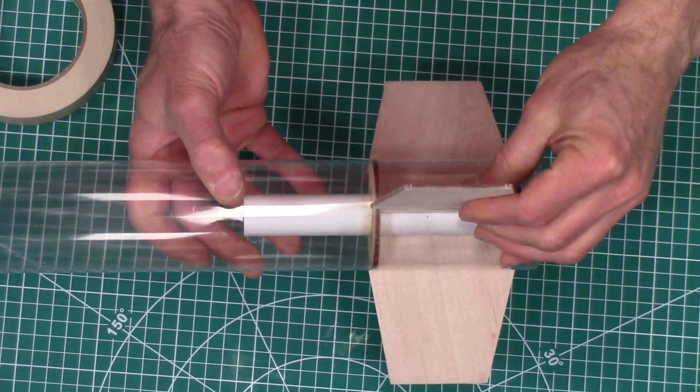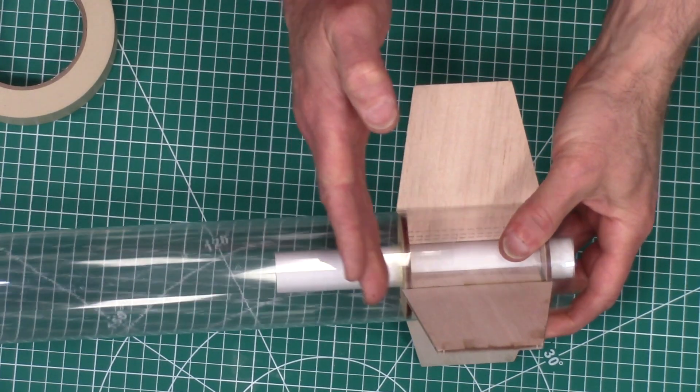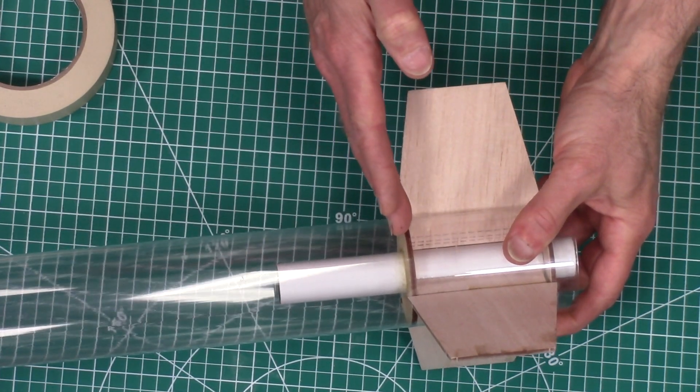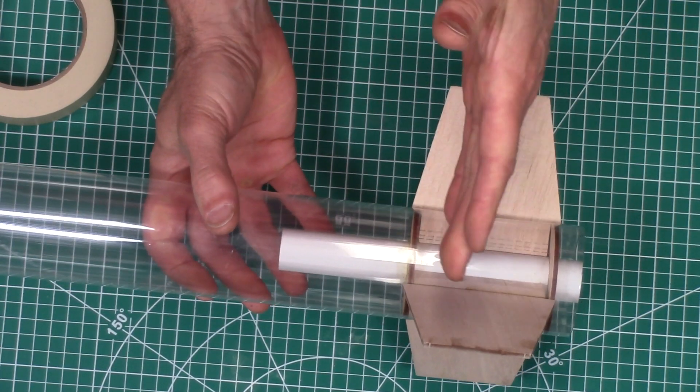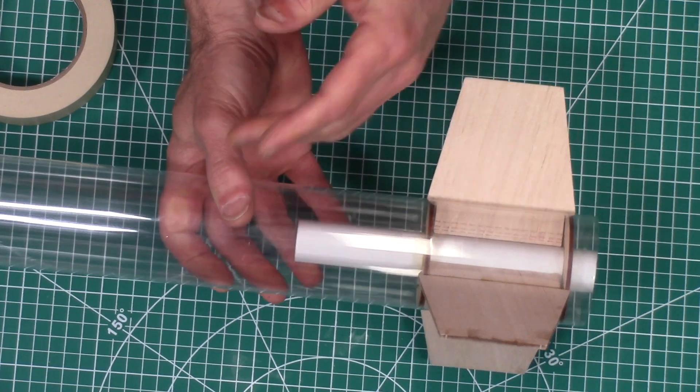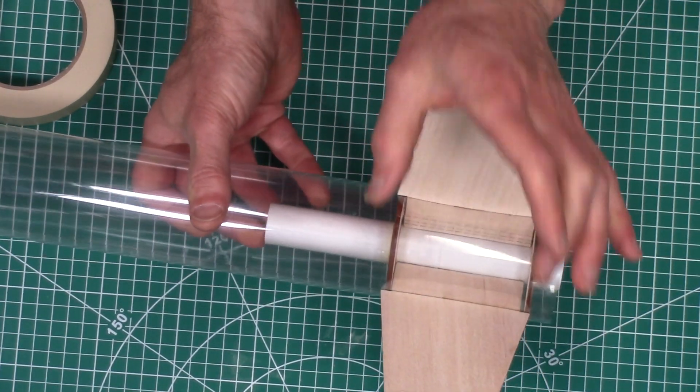So the best thing to do is just to cut your tube before you assemble it so that that front centering ring is at the front end of the tube. So now it's gonna make a shorter engine mount but that's okay.